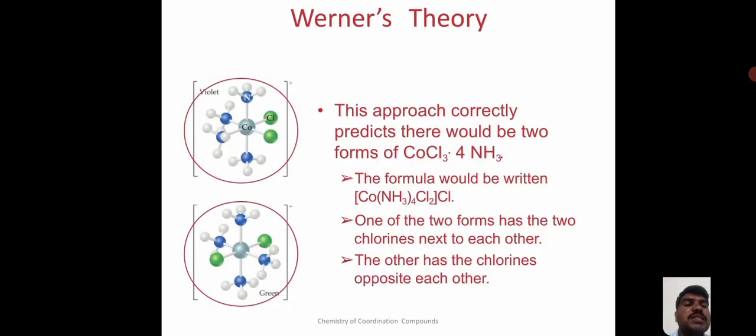Werner theory: this approach correctly predicts there would be 2 forms of cobalt trichloride tetraammine. The formula would be written [Co(NH3)4Cl2]Cl. One of 2 forms has the 2 chlorines next to each other. The other has the chlorines opposite each other.